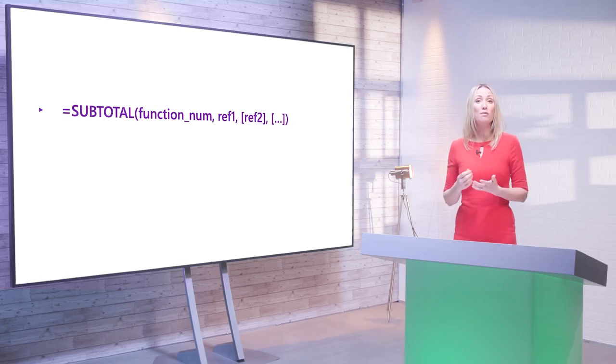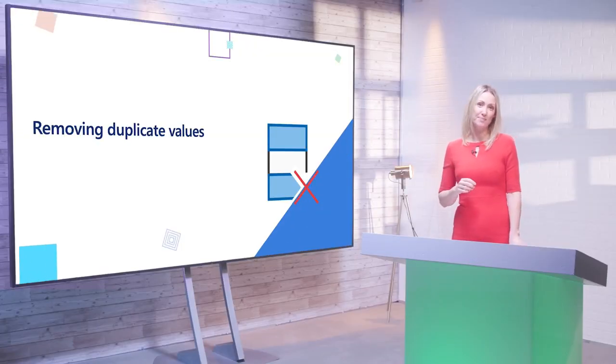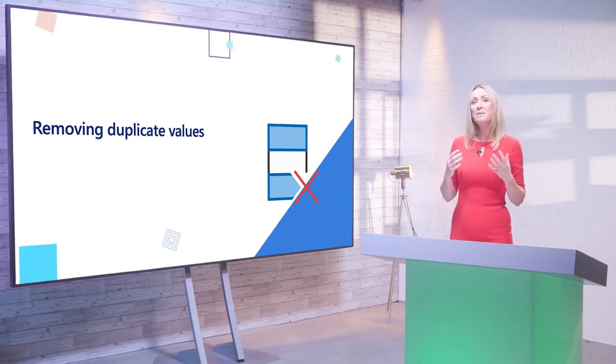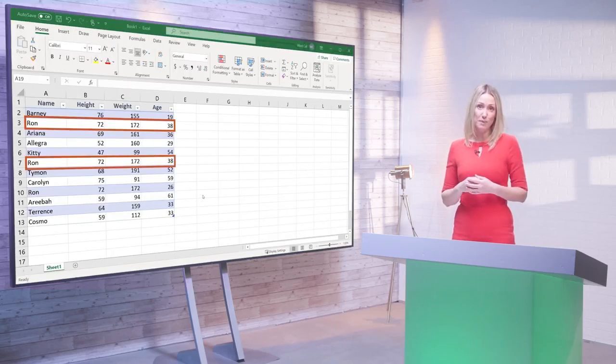The reference arguments ref1, ref2, etc., identify the ranges that you want to subtotal. Now let's think about this scenario: what if the sales figures that WestCal gave Thomas contain duplicate values? He should be able to identify and remove these values accurately. Duplicate values in data can be a common occurrence, especially in large data sets where data has originated from multiple sources, and they can be difficult to identify when dealing with many columns and rows. It is important to identify and remove duplicates from your data to ensure accuracy and that your analyses are correct.